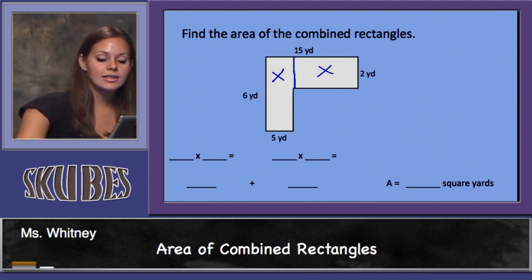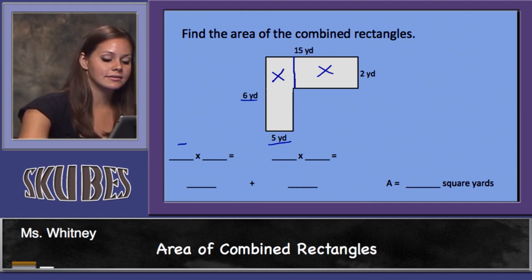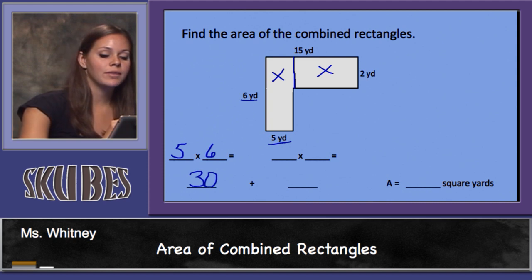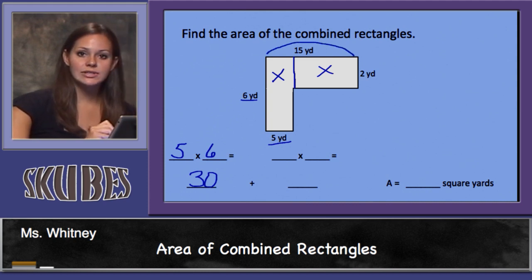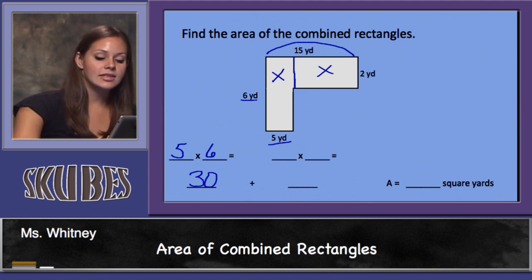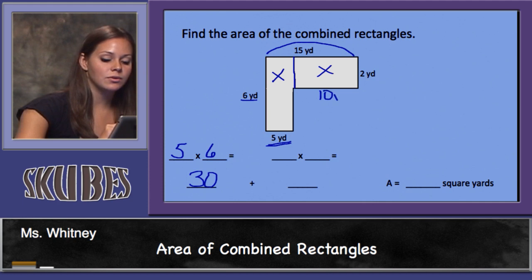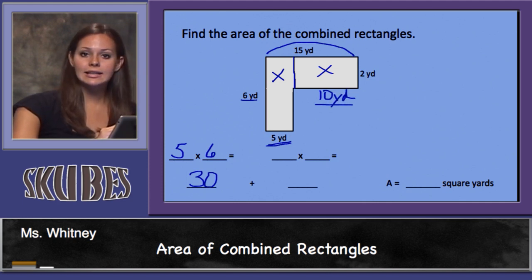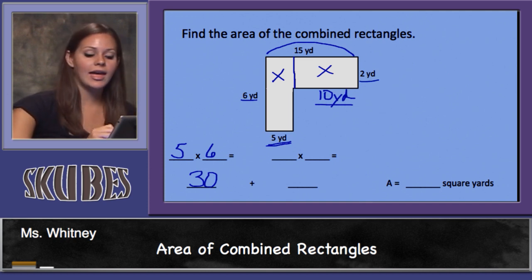In this first rectangle, we have 5 times 6, which is equal to 30 square yards, and we'll add it to the area of the second rectangle. We can see that this entire side is 15 yards and this section is 5 yards, so this section must equal 10 yards.